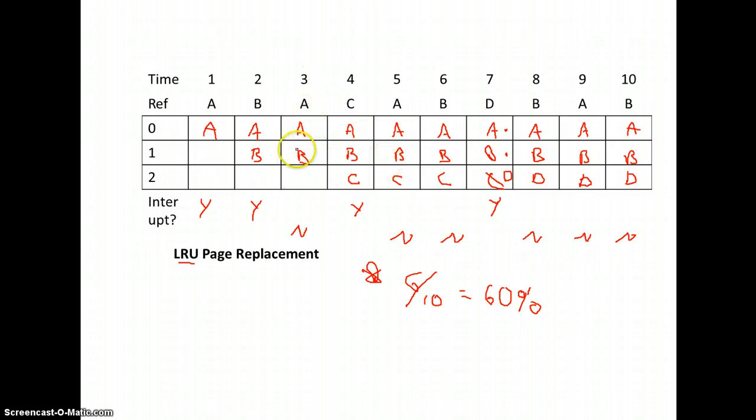So here referencing A, it was already in memory. Here referencing A, it was already in memory. Here referencing B, it was already in memory. Here referencing B, it was already in memory. Here referencing A, it was already in memory. Here referencing B, it was already in memory.